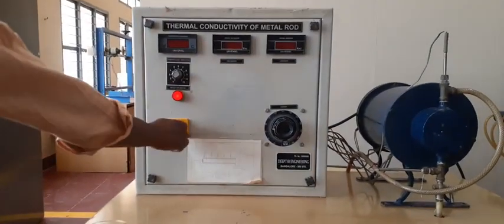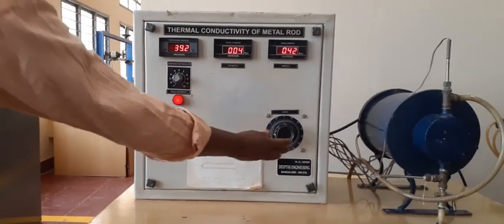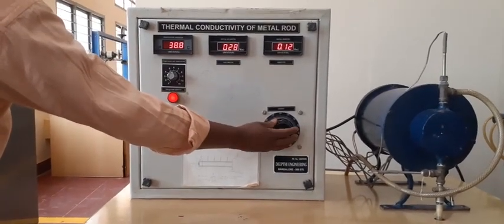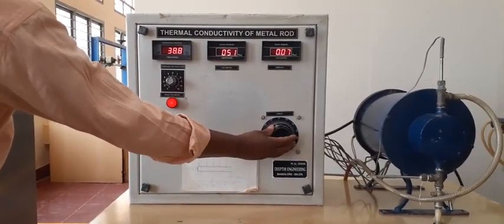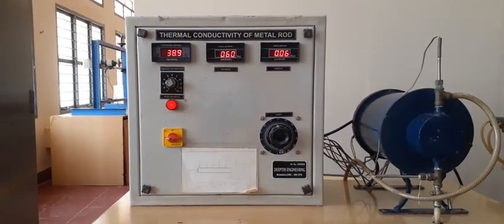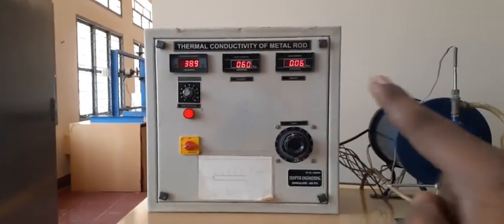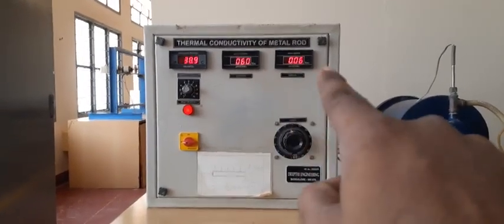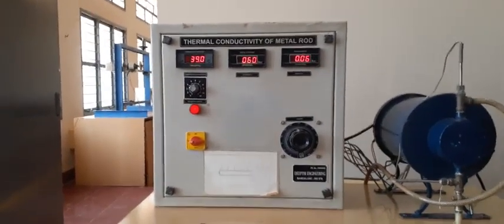Now, the procedure is: first we switch on the mains, switch on the console and then dimmerstat. The dimmerstat heat is supplied, suppose 60 volts. The corresponding amperes is 0.06. You can see here. So, the heat supplied is 60 into 0.06.